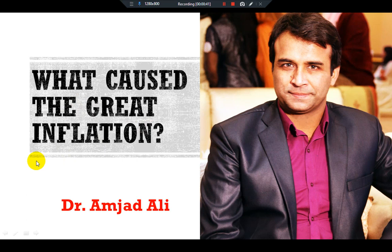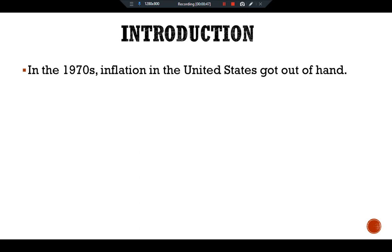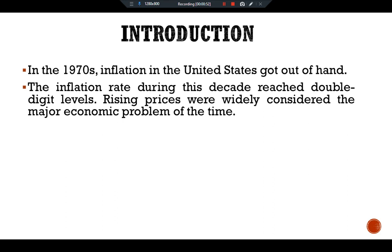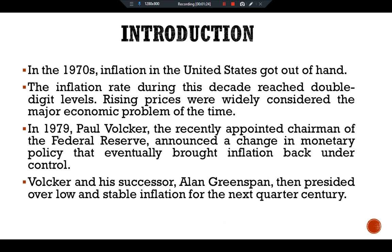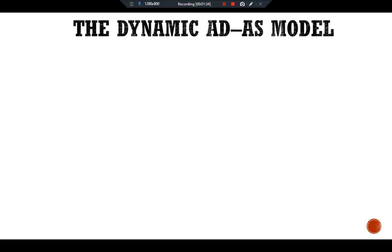In this video, we are going to discuss a case study: what caused the great inflation? In the 1970s, inflation in the United States got out of hand. The inflation rate during this decade reached double-digit levels, and rising prices were widely considered the major economic problem of the time. In 1979, Paul Volcker, the recently appointed chairman of the Federal Reserve, announced a change in monetary policy that eventually brought inflation back under control. Volcker and his successor Alan Greenspan then presided over low and stable inflation for the next quarter century.